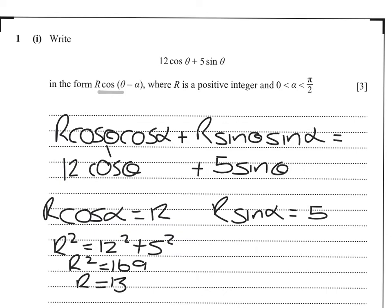And dividing sine alpha by cos alpha gives us tan alpha. So tan alpha is 5 twelfths and alpha is 0.3947. And if we round that to three significant figures, that's 0.395.